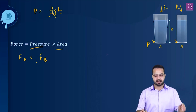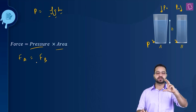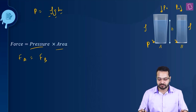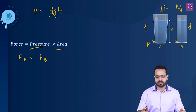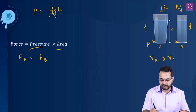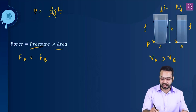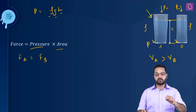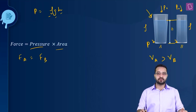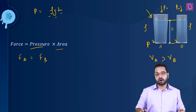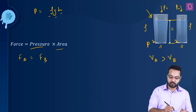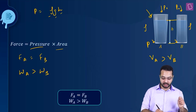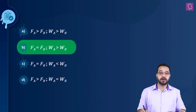Now the question is what about the weights of water inside these vessels? The density of water is the same for both containers. By simply looking at the picture, the volume of vessel A is greater than the volume of vessel B. The height is the same, but vessel A has a greater cross-section as we go up. So the volume of water in vessel A is greater than in vessel B. Hence the weight of water in vessel A is greater than in vessel B — WA > WB. So option B is the correct answer.